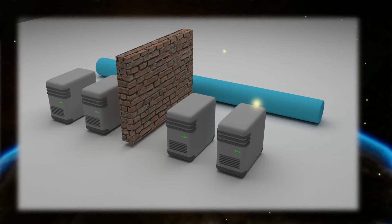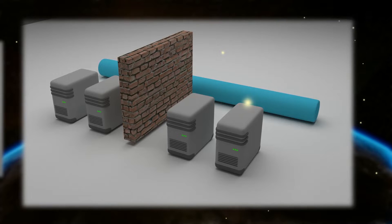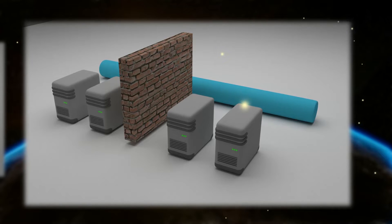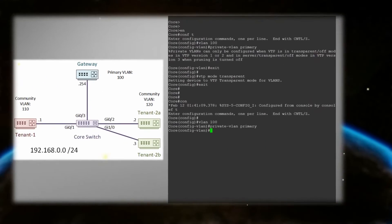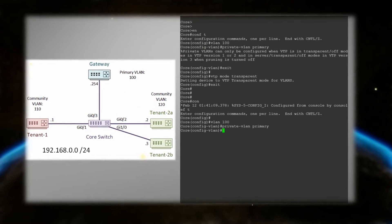The solution I chose was private VLANs. We can use them to separate devices while still keeping them in the same subnet and still allowing them to access the internet. I'm going to show you how private VLANs work and how they're configured.